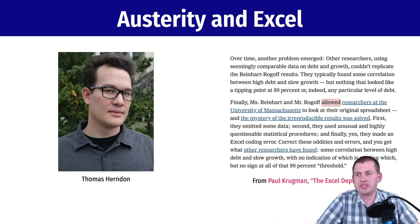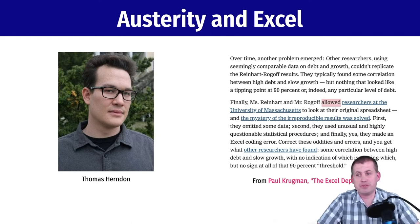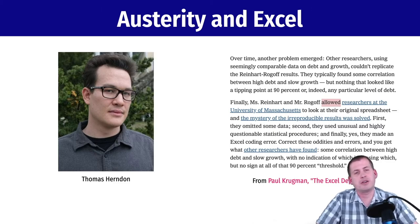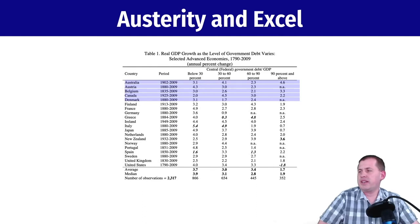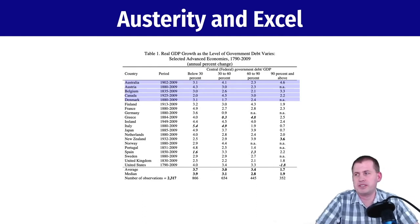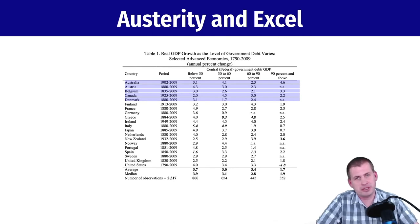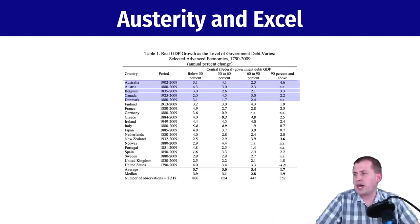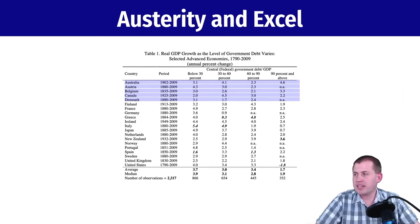What Herndon discovered was that they had made a big error in their analysis. They didn't use Stata, SPSS, or R — they used Excel. This was the main finding from their paper: Table 1, showing debt-to-GDP ratios for many different countries from 1790 to 2009, tracing economic growth during periods of high and low debt ratios.